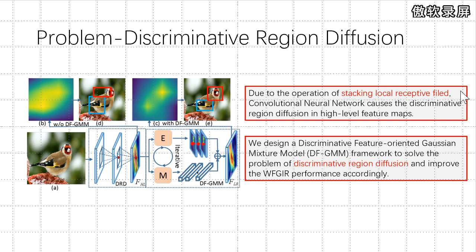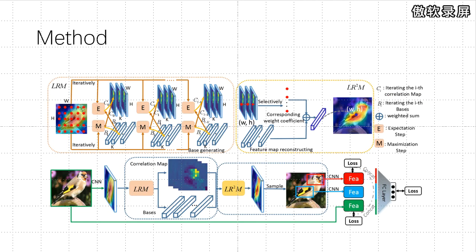We argue that this could cause certain spatial propagation of discriminative and less discriminative responses, and leads to the problem of discriminative region diffusion in WFGIR, which aggravates the difficulty of discriminative region localization.